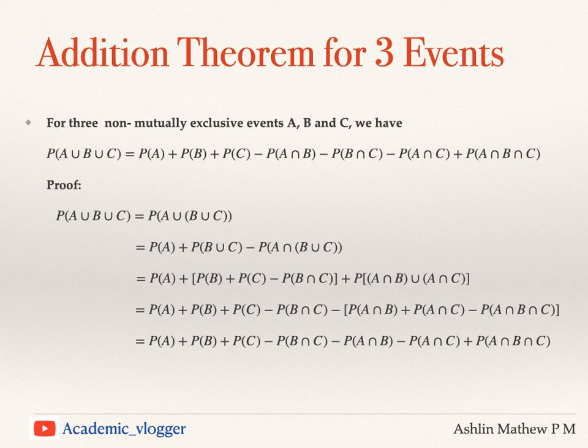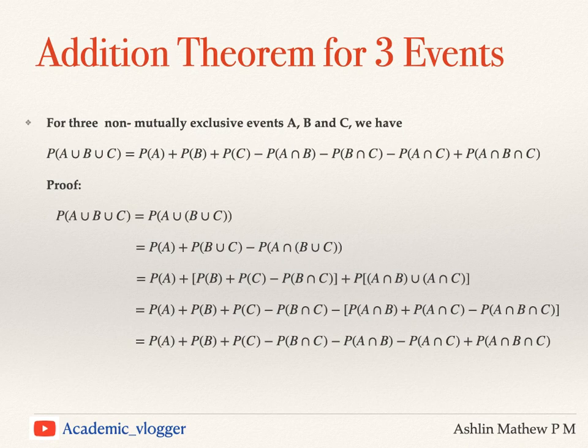Now we are going to discuss the addition theorem for three events. For three non-mutually exclusive events A, B, and C, if we are required to find the probability of A union B union C, it equals probability of A plus probability of B plus probability of C minus probability of A intersection B minus probability of B intersection C minus probability of A intersection C plus probability of A intersection B intersection C.